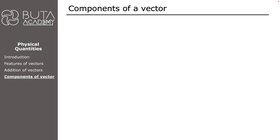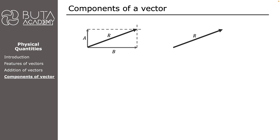As we learned in the previous lesson, we can add any two vectors to get a single vector which has the same effect as the previous two. In the example on the screen, we are adding two perpendicular vectors A and B and get a resultant vector R, using the tail-to-tail method. If we can combine two vectors to get a single one, we can reverse the process and split a single vector into two. To do so, we draw the single vector, then starting from its head we draw parallels to the X axis and Y axis, and finally draw two vectors starting from the tail of the resultant and ending at the respective parallel lines. As you can see, we get exactly the same diagram as before.